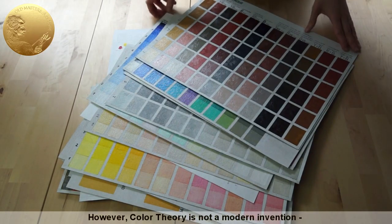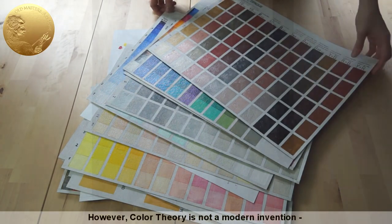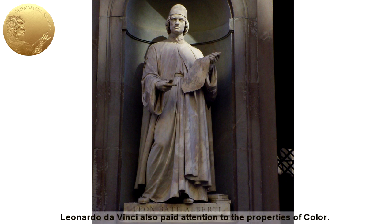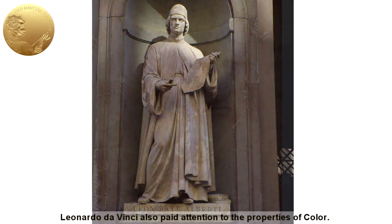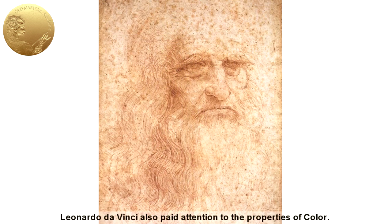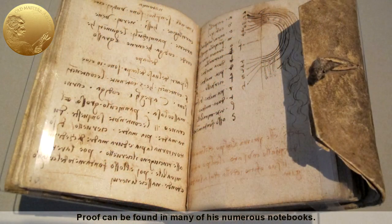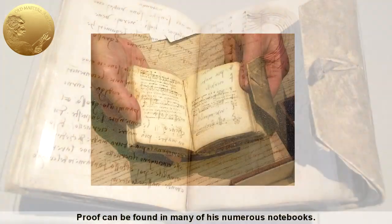However, color theory is not a modern invention. Color theory principles first appeared in the writings of Leon Battista Alberti in the beginning of the 15th century. Leonardo da Vinci also paid attention to the properties of color, as proof can be found in many of his numerous notebooks.